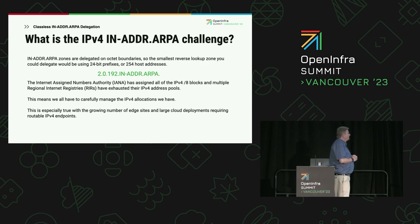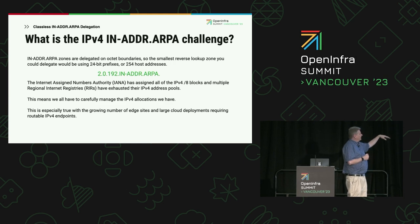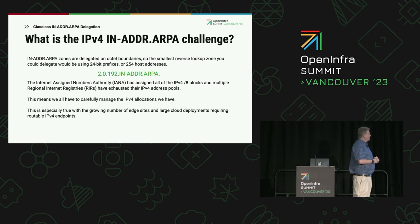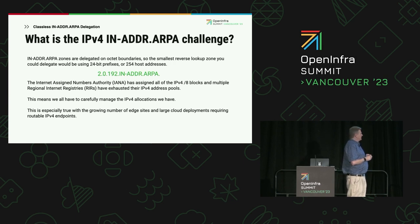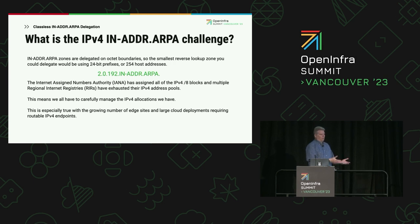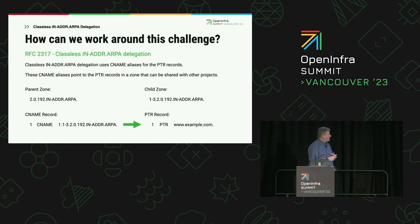The big challenge with IPv4 is that these reverse lookup zones are on octet boundaries. Essentially the smallest chunk of that reverse lookup space that you can delegate to somebody else is a 254-address block. That's not great considering we're out of IPv4 addresses around most of the world — we're all trying to conserve how we allocate and delegate IPv4 addresses to various projects or customers, especially with edge sites where we have a lot of deployments with very small sets of endpoints required.